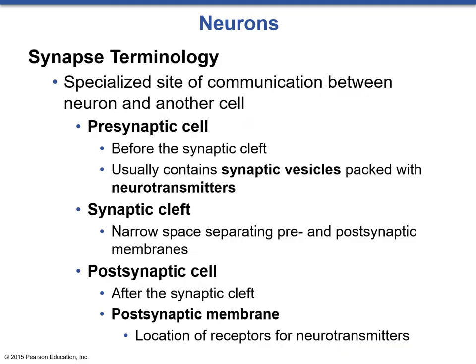To review synapse terminology: the synapse itself is a specialized site of communication between the neuron and another cell. The presynaptic cell comes before the cleft and usually contains synaptic vesicles packed with neurotransmitters — often acetylcholine, but not always. The synaptic cleft is the space separating the pre- and postsynaptic membranes. The postsynaptic membrane is the location of receptors for neurotransmitters.